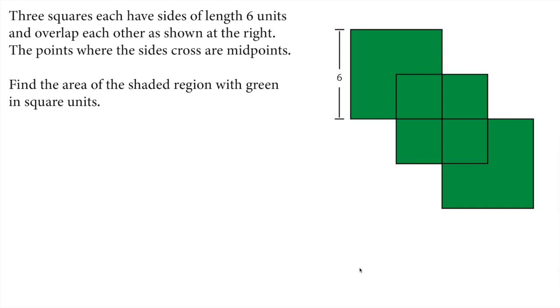Let's read the question. Three squares each have sides of length 6 units and overlap each other as shown at the right. The points where the sides cross are midpoints. Find the area of the shaded region with green in square units.